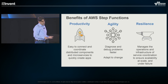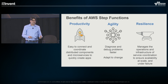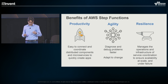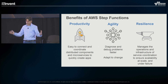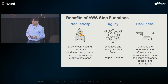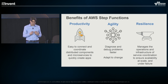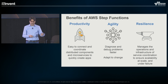The benefits we hope you get are threefold. First, we want to make you more productive — easy to connect and coordinate applications so you can create apps quickly and focus on what makes your app different, not worrying about the plumbing underneath. Second, we want to make your apps more agile — diagnose and debug problems faster by giving you transparency of what's going on in a distributed environment, and make apps adaptable so they can grow and evolve with your business. Finally, we want these things to be resilient — handle scale without worrying about the underlying infrastructure, and fail gracefully when tasks don't work or network connections get severed, with a way to recover and keep going.